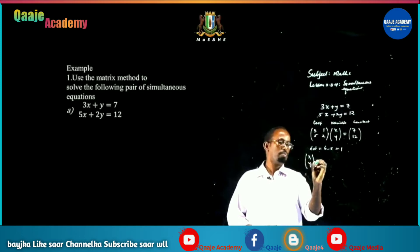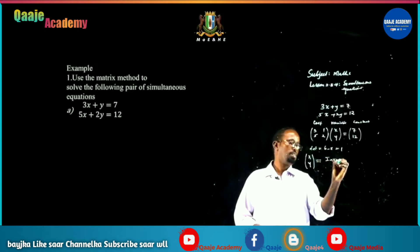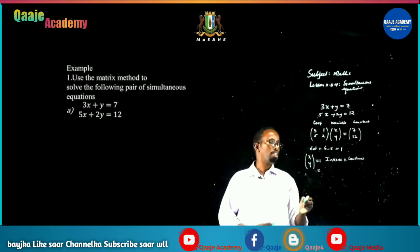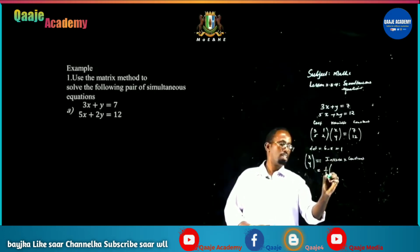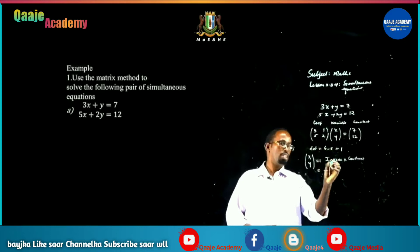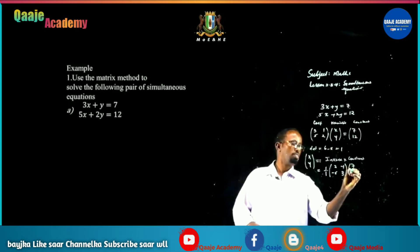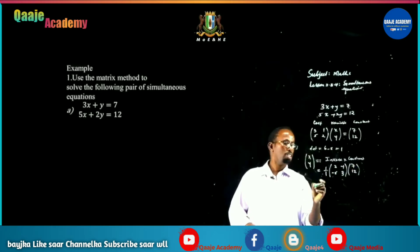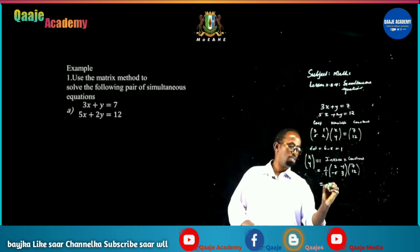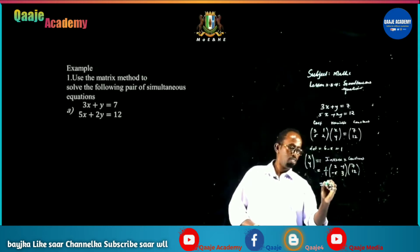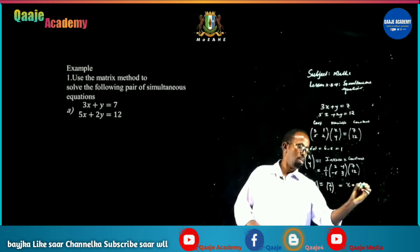The variable matrix [x; y] equals the inverse times the constant matrix. The inverse uses the reciprocal of the determinant (1/1), step 1. Step 2: interchange elements in the main diagonal to get 2, reverse signs to get minus 1 and minus 5, then 3. Multiplying: 14 minus 12 equals 2, and minus 35 plus 36 equals 1. So x equals 2 and y equals 1.